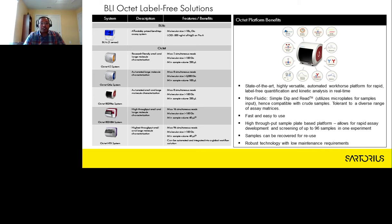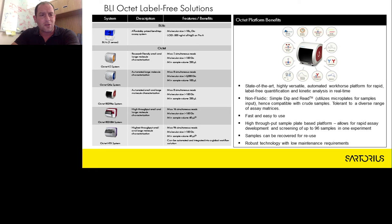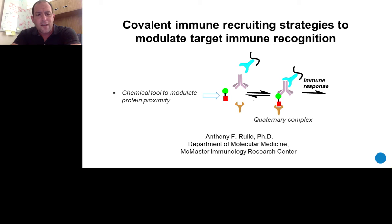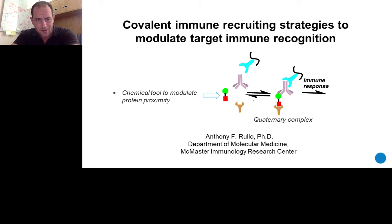I'd now like to hand over to Professor Anthony Rullo, our featured speaker today. Today I'll be speaking about one of the major research platforms in our group where validation using Octet biosensors has proved critical in informing compound validation and design decisions. We develop molecules designed to modulate the proximity of endogenous immunological proteins already in our body with target cells — in this particular application, cancer cells. This bifunctional tool has two different binding selectivities, one for each protein being brought together.